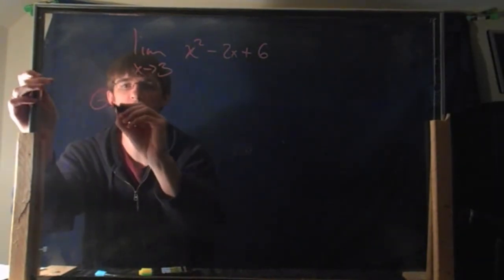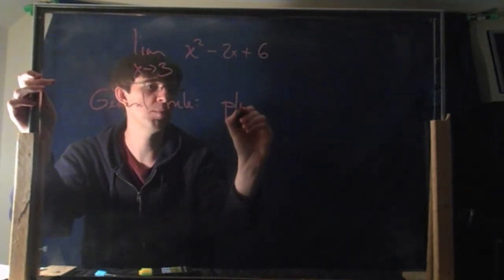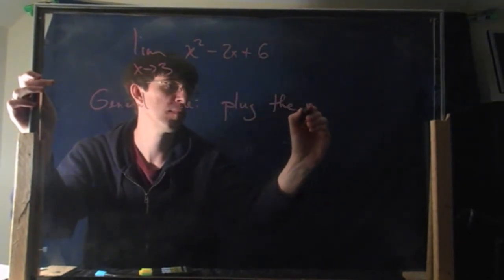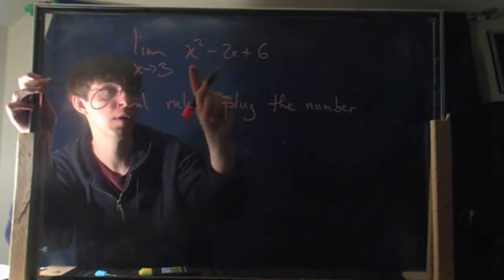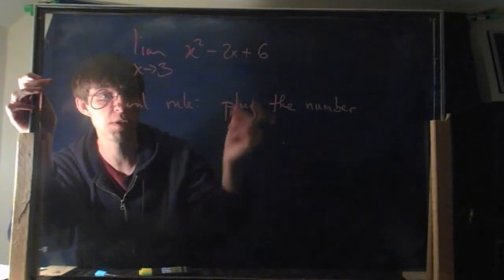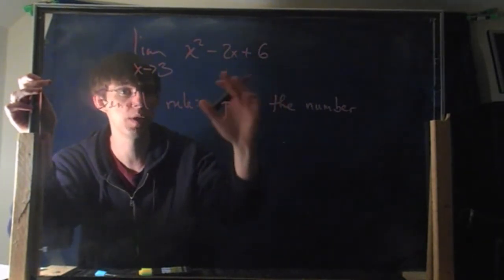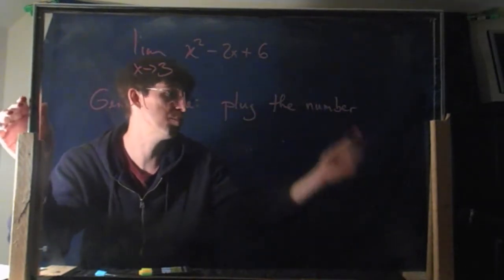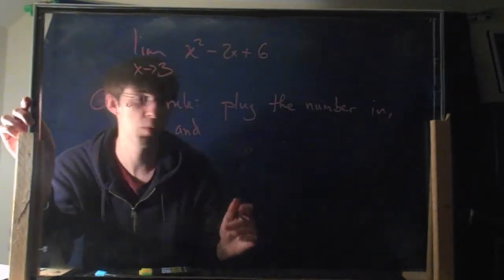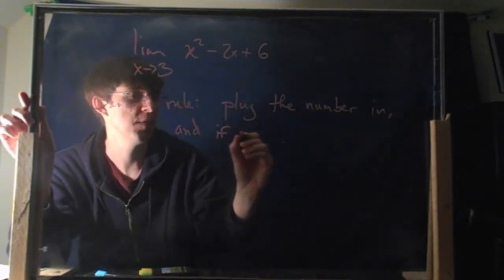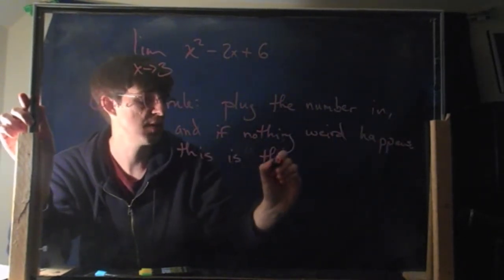Here's the general rule for these sorts of things: you plug the number in — by the number, I'm referring to this 3 right here. I want to know what the values of this are when x is close to 3. Usually that's going to be the same as whatever the value is when x actually is 3. So you plug the number in. This is slightly informal, but it works most of the time. If nothing weird happens, this is the limit.